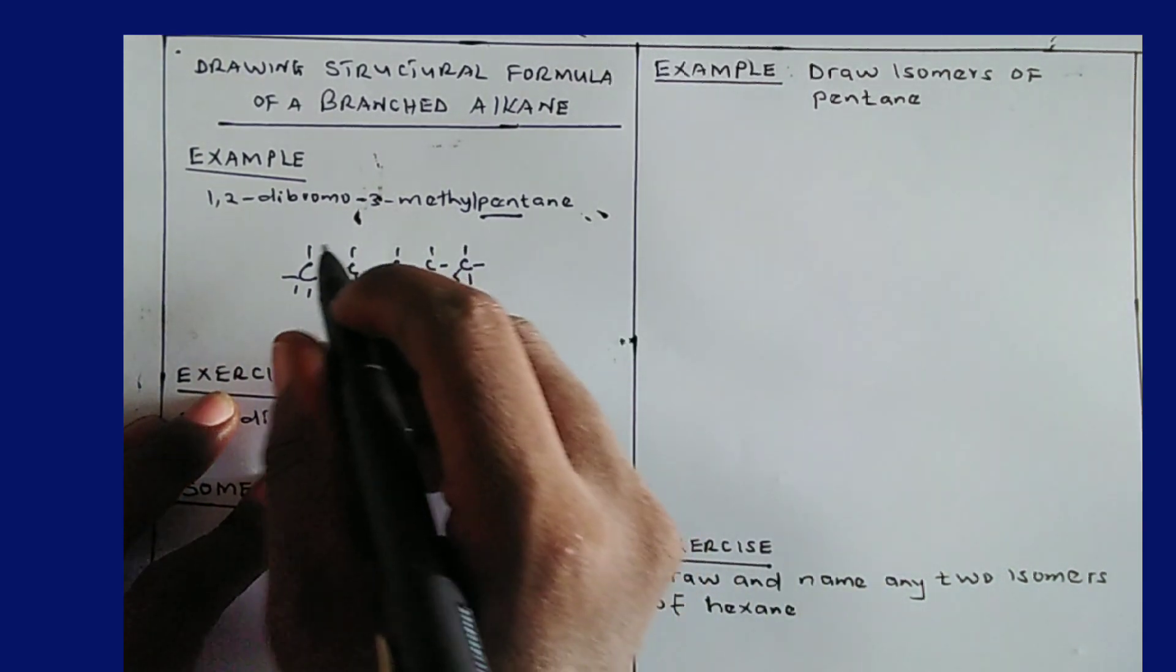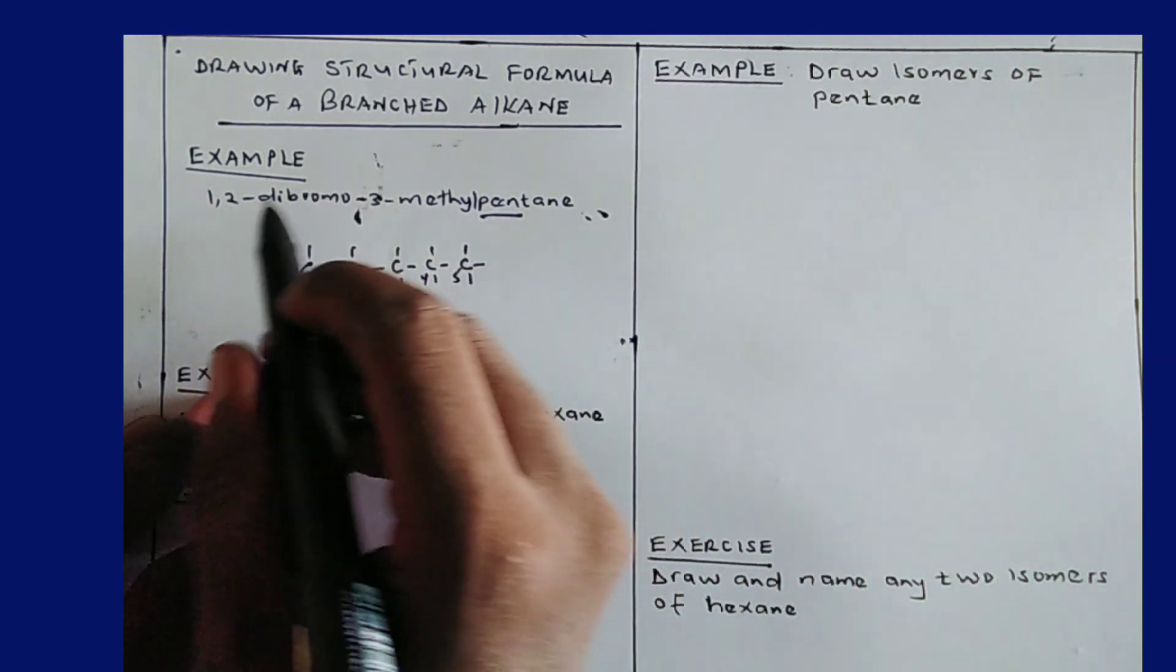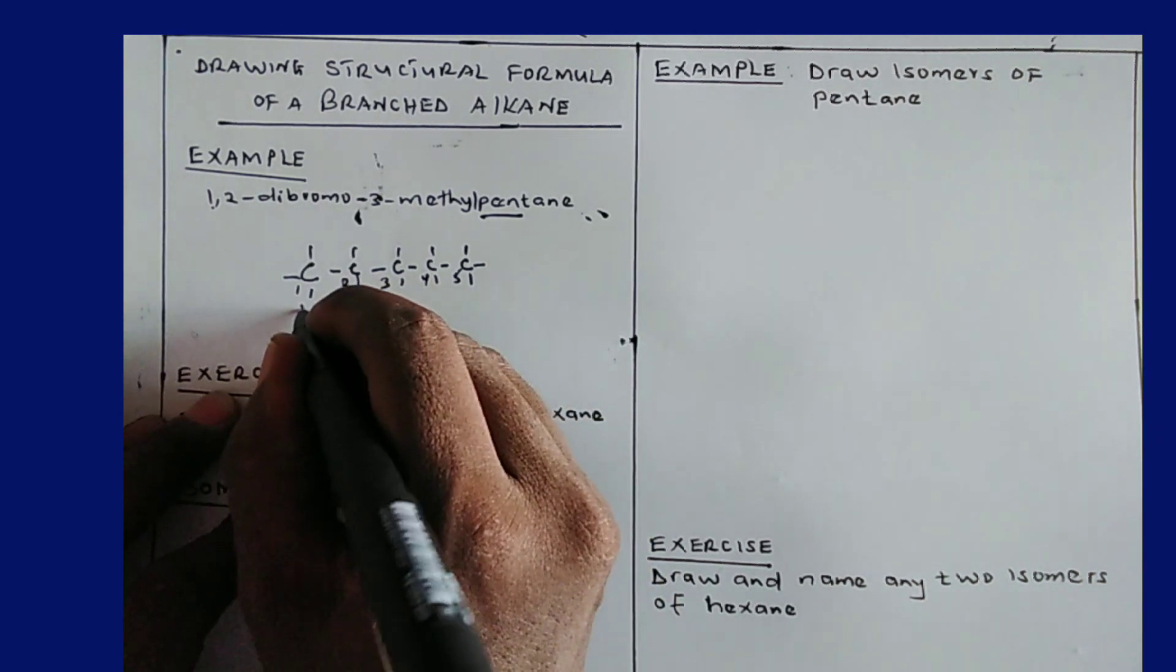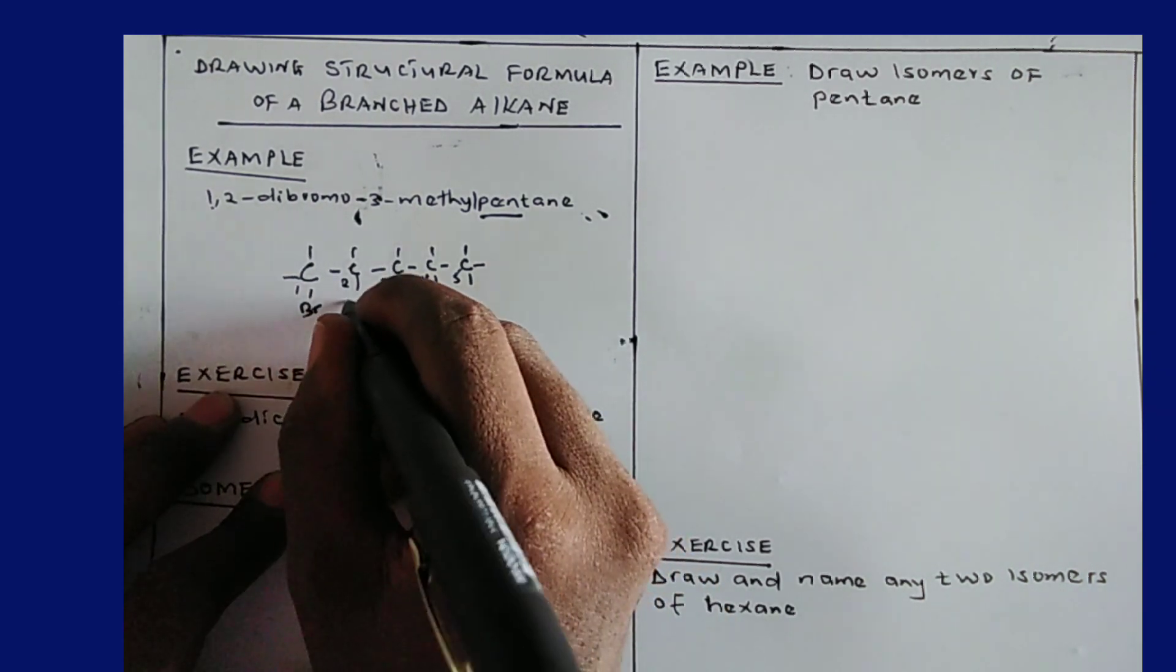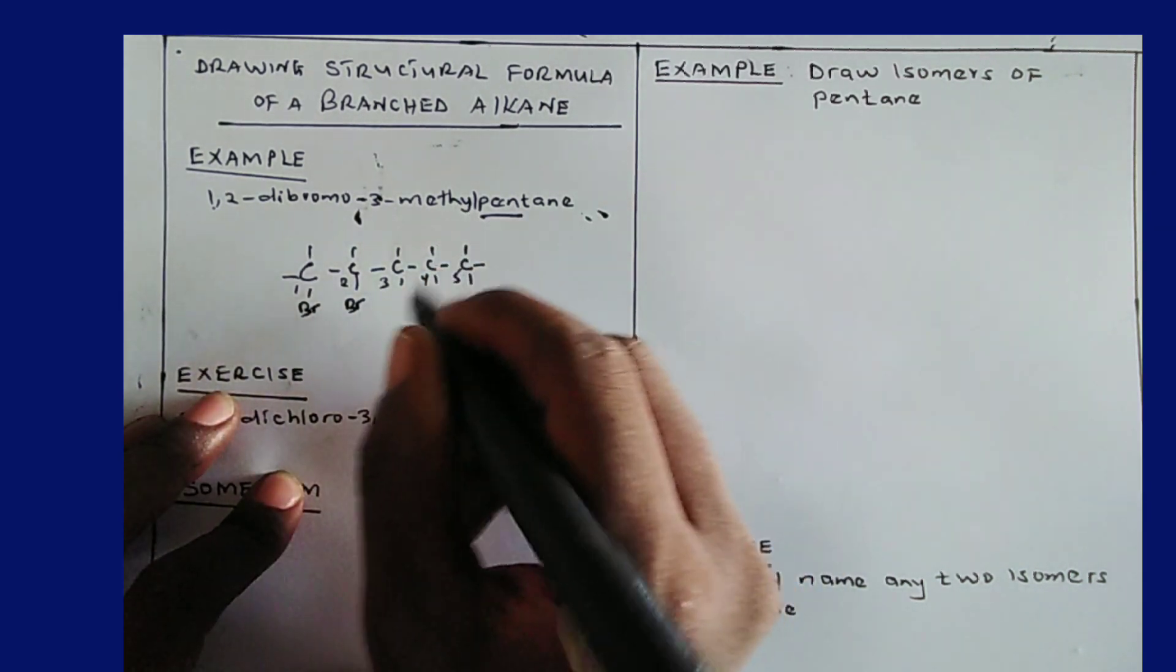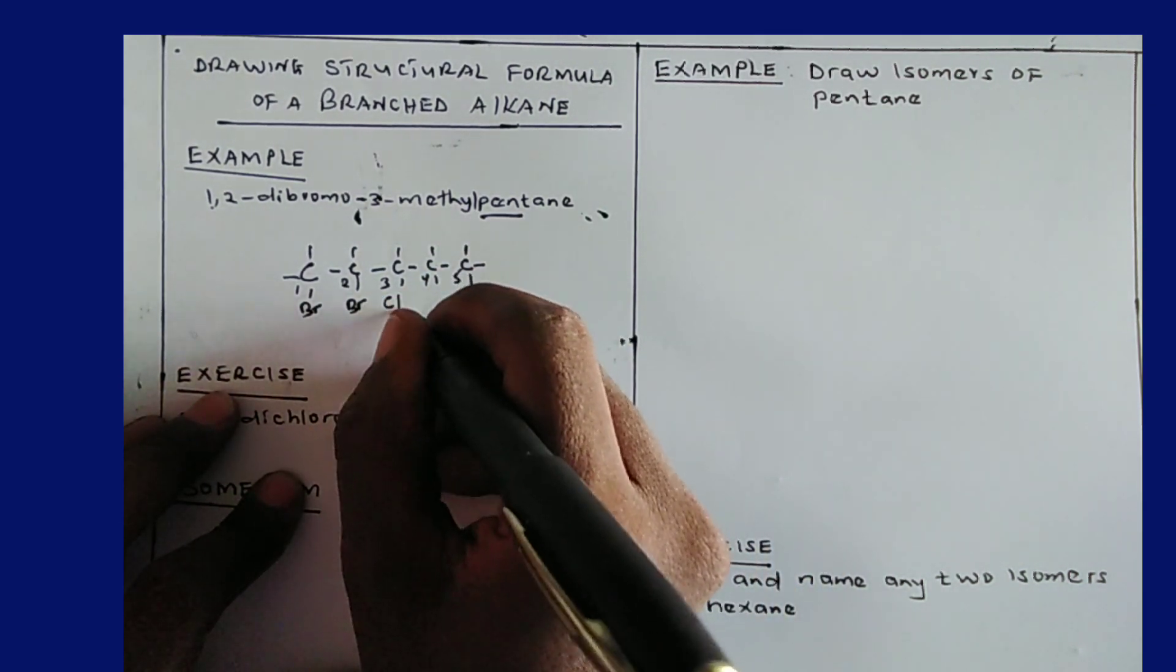Now then I come to place the position of the branches. I'm told here one, two, dibromo. So I place here a Br and then I place here a Br. Now then here we have methyl number three, place here CH3.